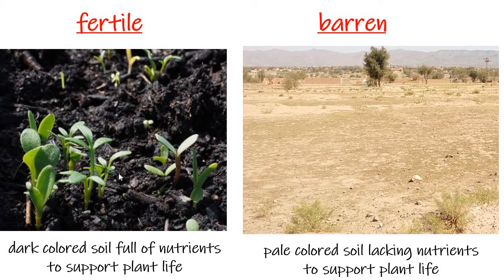Next, let's look at soil types. Fertile soil, f-e-r-t-i-l-e, is the kind that plants grow well in. The word fertile literally means 'able to reproduce.' It is dark-colored soil full of nutrients that support plant life, with lots of decaying plant and animal matter from decomposers. The opposite is infertile or barren, b-a-r-r-e-n, which literally means 'unable to reproduce.' This soil is pale in color because it lacks those dark, rich nutrients that support plant life.